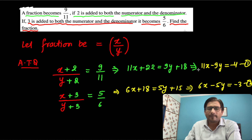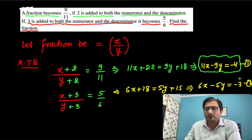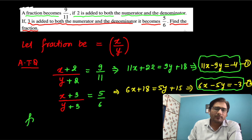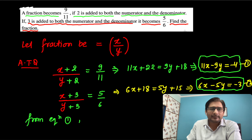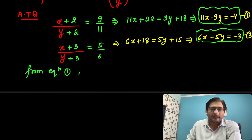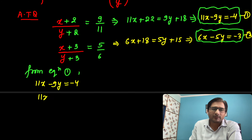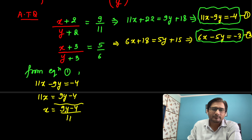We have to solve these two equations using the substitution method. From Equation 1, let us find the value of x. Equation 1 is 11x − 9y = −4, so x is equal to (9y − 4) upon 11. This is Equation 3.